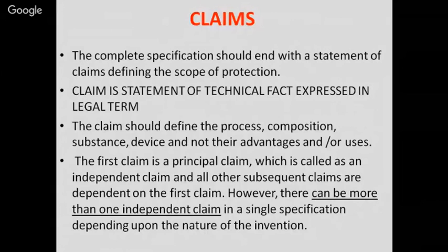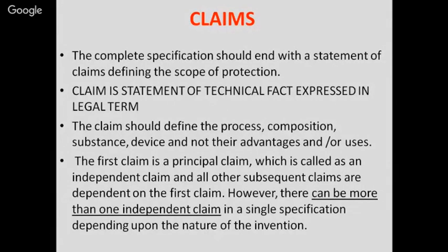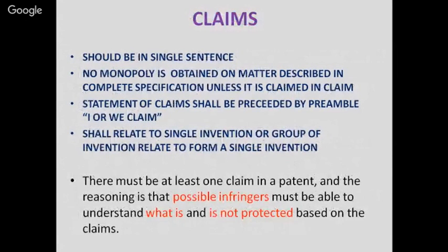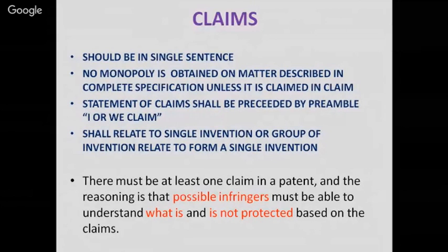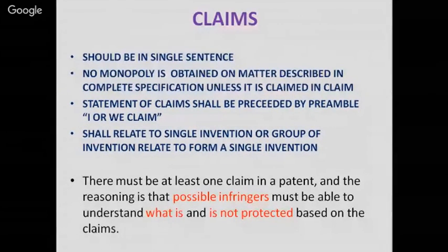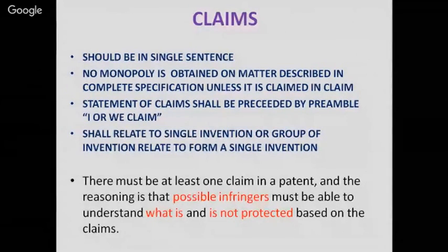The claim should define the process, composition, substance, or device — not their advantages or uses. The first claim is a principal claim called an independent claim, and all subsequent claims are dependent on it; however, there can be more than one independent claim in a single specification depending on the nature of the invention. Each claim should be a single sentence. There must be at least one claim in a patent, and the reasoning is that possible infringers must be able to understand what is and is not protected based on the claims.